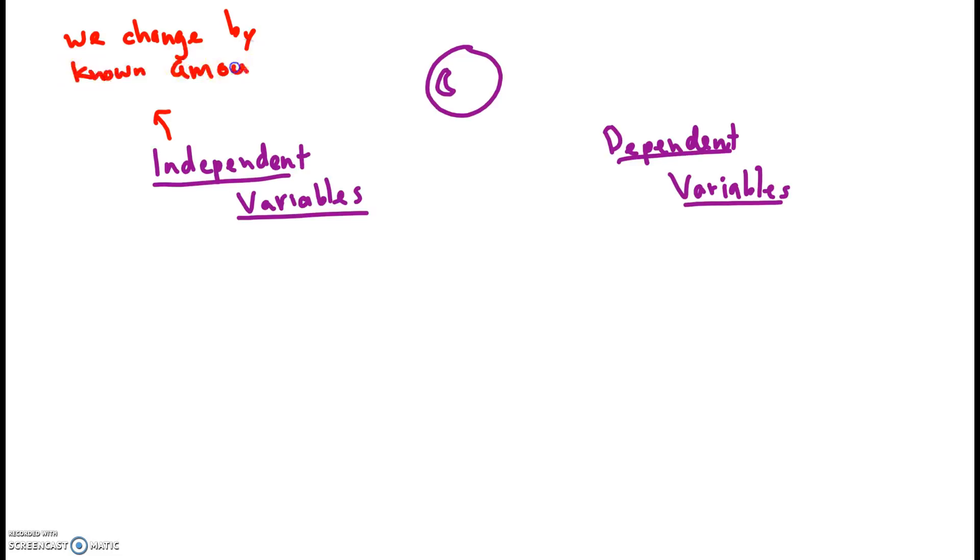So we always increase, for example, we increase the height that we drop it from. And we always increase it by 5 centimeters in each subsequent trial. The dependent variable is the one that we're just trying to see how it responds. It's sometimes called the response variable.